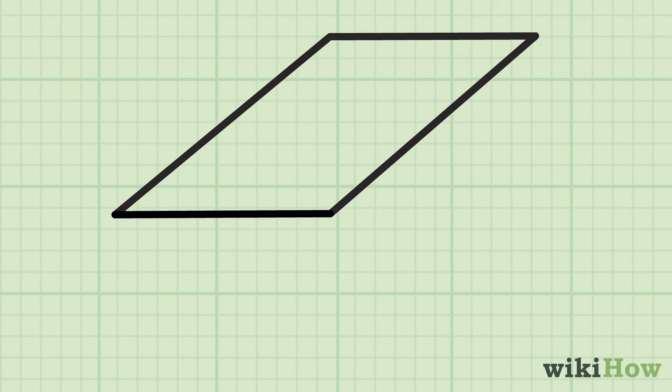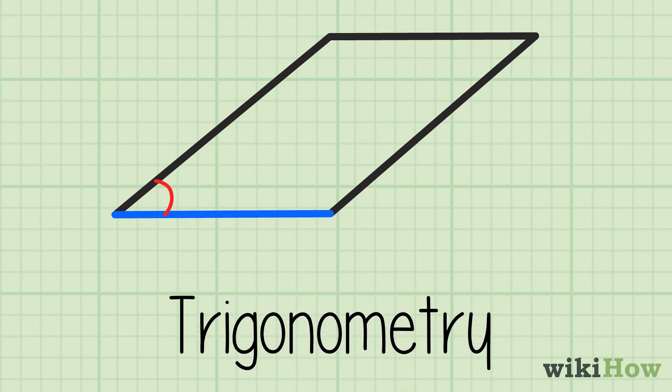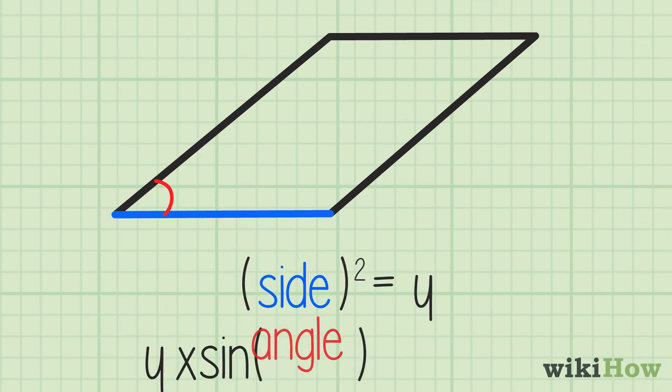If you only know the length of one side of the rhombus and one of the angles, you can still figure out the area using trigonometry. To do this, square the length of the known side, then multiply the result by the sine of one of the angles.